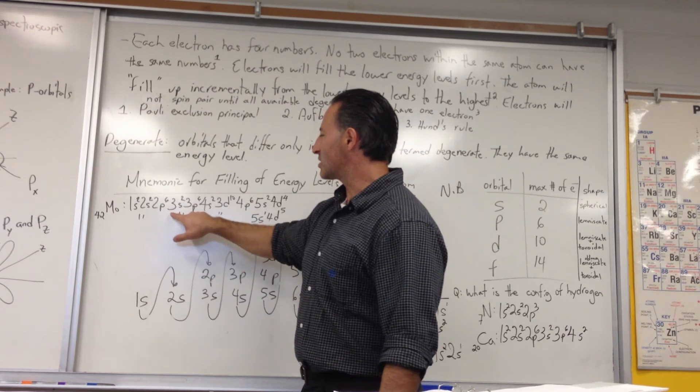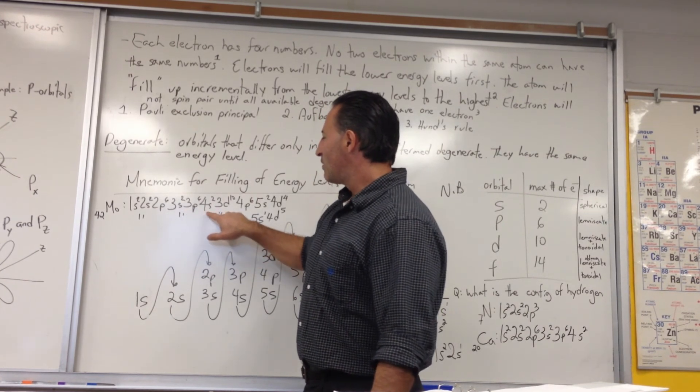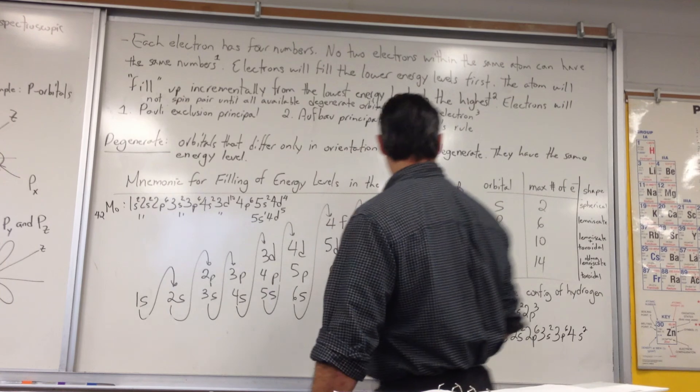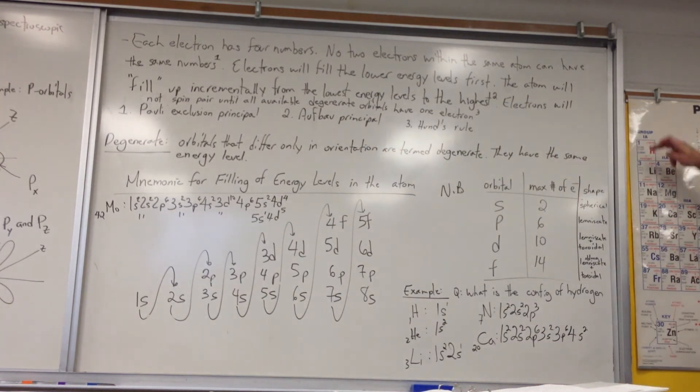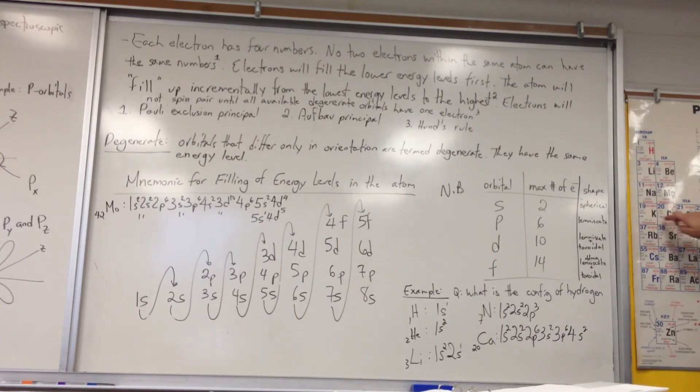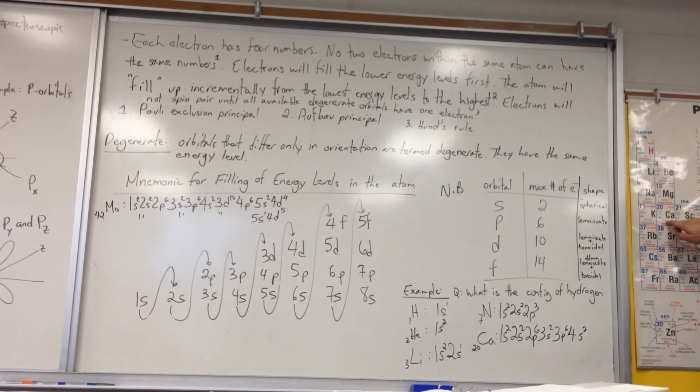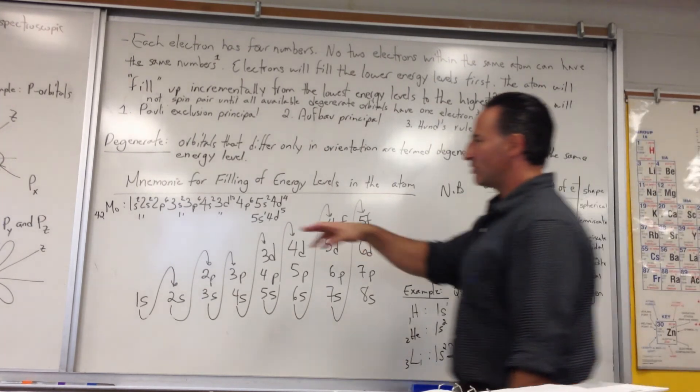So it goes 1S2, 2S2, 2P6, 3S2, 3P6, 4S2. 4S2 would bring us down to calcium. But we're not done. We have to go to 42.